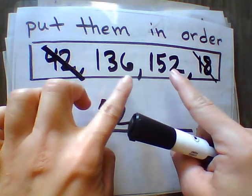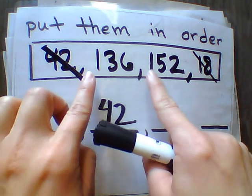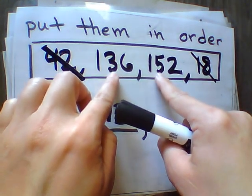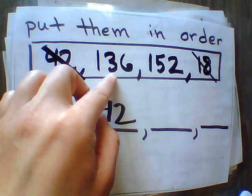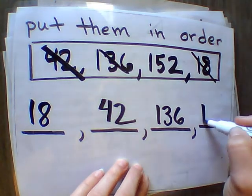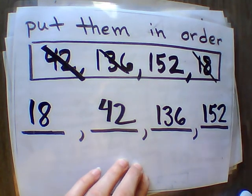Then I'm going to look at 136 and 152. I touch the hundreds. I jump back one spot to the tens. I notice that 3 tens is less than 5 tens. So 136 would be less than and then 152 would be the greater number.